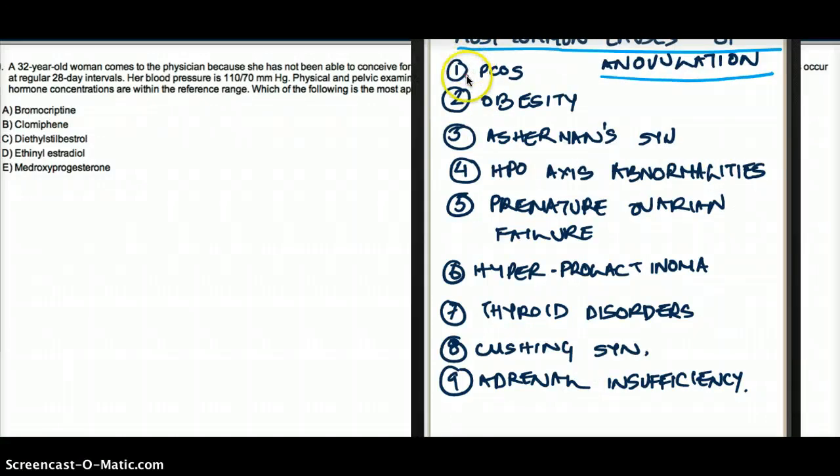If the patient had PCOS, then her hormones would not be within reference range, so I would cross this out. She does not have HPO axis abnormalities for the same reason. She does not have premature ovarian failure because of the same reason. She does not have hyperprolactinoma for the same reason.